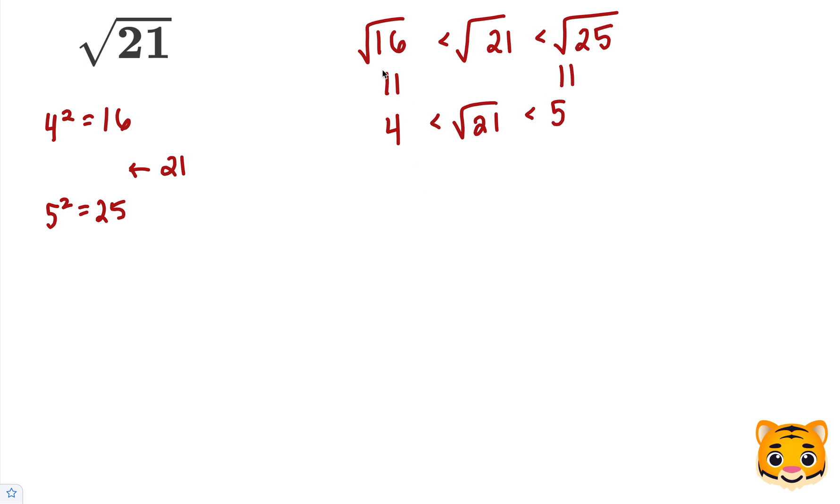The reason we can rewrite the square root of 16 as 4 is because 4 squared is 16. And the reason we can rewrite the square root of 25 as 5 is because 5 squared is 25. Now we can see that the square root of 21 lies between 4 and 5.